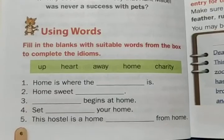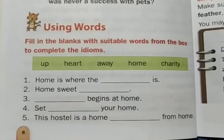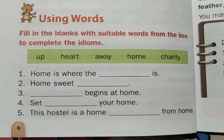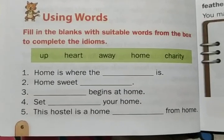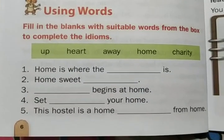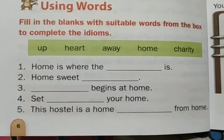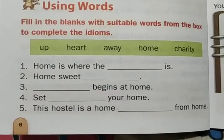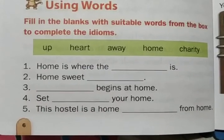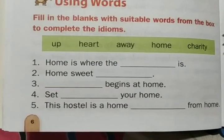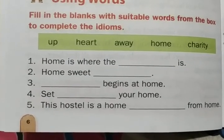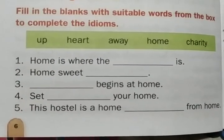Now we are going to see the 'Using Words' section — fill in the blanks with suitable words from the box to complete the idioms. The help box words are: up, heart, away, home, charity. The first one is: home is where the dash is — the answer is heart. The second one is: home sweet dash — the answer is home, so home sweet home.